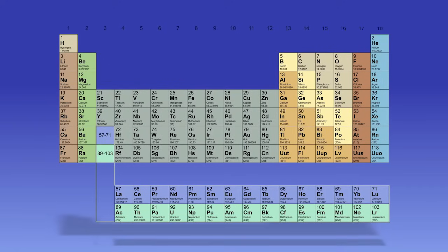Looking at the overall table again, you will notice that it is made up of columns and rows. The columns are known as groups, and the rows are known as periods.